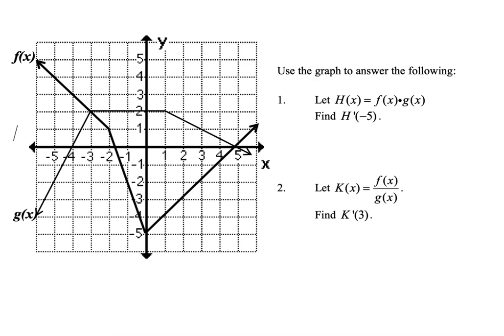In this example, we want to use the given graph to answer the following questions. For number one, we're letting h of x be f of x times g of x, and we are interested in finding h prime of negative 5 — the derivative of h at negative 5. The first thing we need to notice is how h is defined: h is defined as a product, so in order to find the derivative of h, we're going to need to use the product rule.